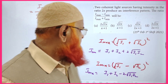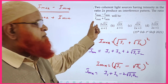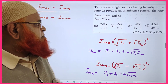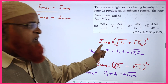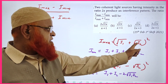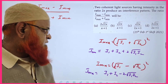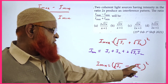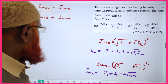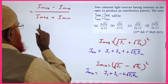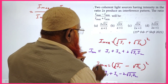Now the next question asks us to find (I_max - I_min)/(I_max + I_min). We know I_max = (√I₁ + √I₂)² and I_min = (√I₁ - √I₂)². Expanding both expressions gives I_max = I₁ + I₂ + 2√(I₁I₂) and I_min = I₁ + I₂ - 2√(I₁I₂).